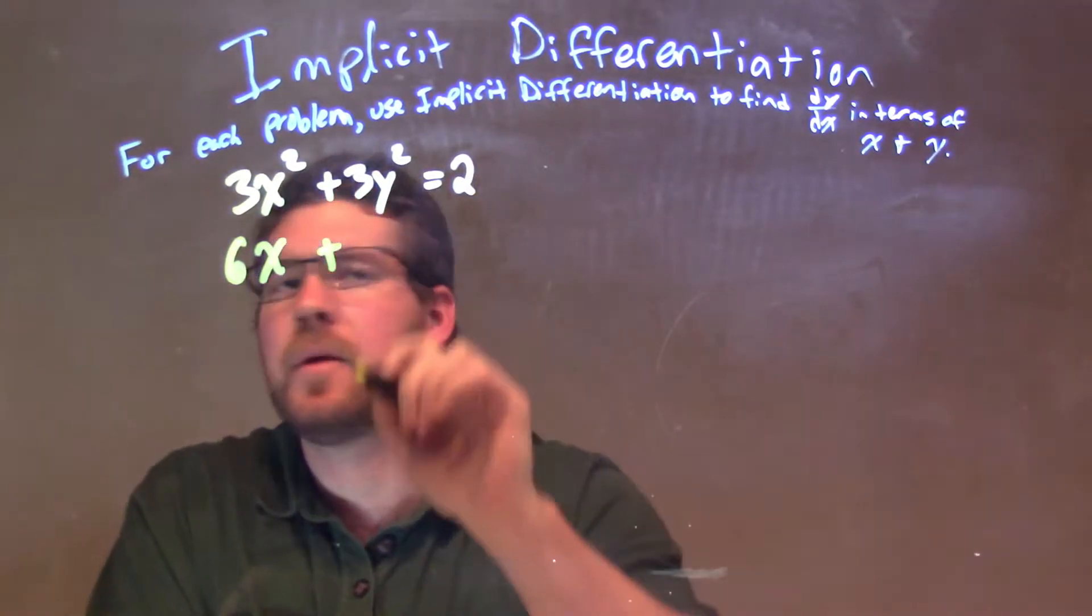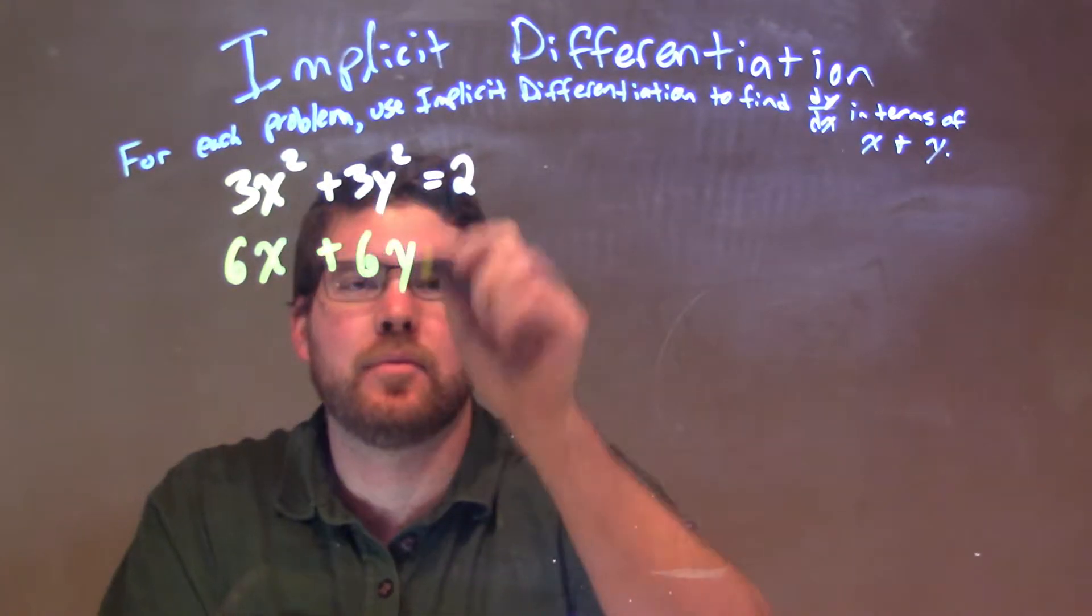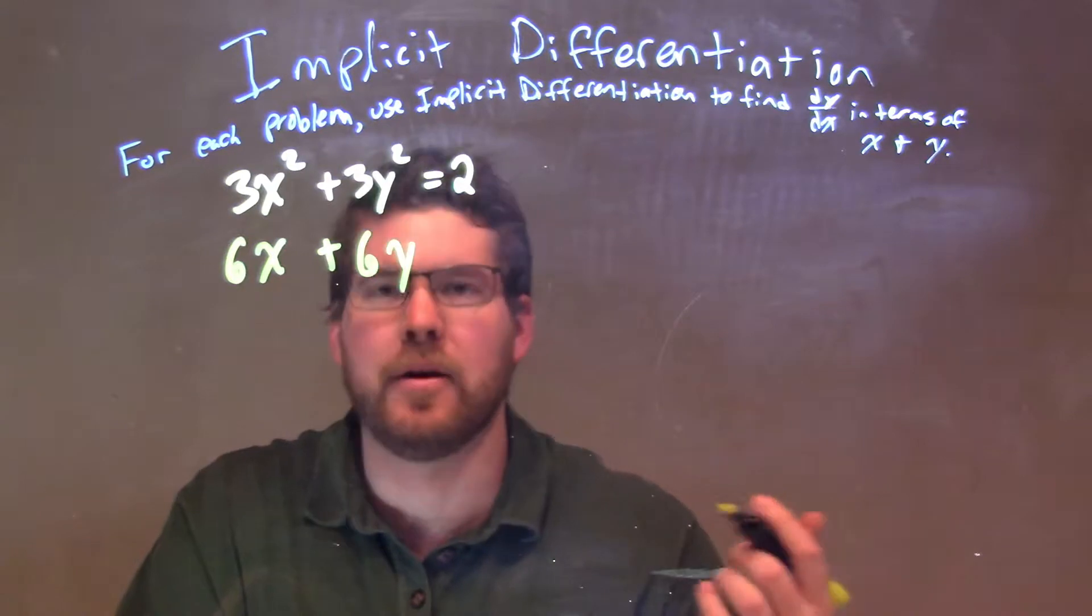I'm going to do the same thing with y, pretty much exactly the same as the first part. 2 comes down, times 3 is 6, y subtract the exponent by 1, to the first power now.